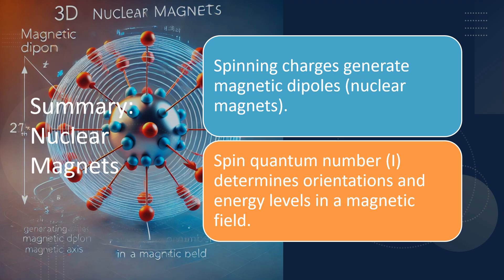To summarize, nuclear magnets arise from the spin of protons and neutrons. They interact with magnetic and electric fields, creating unique behaviors based on their spin quantum numbers. These properties are the foundation for techniques like NMR and MRI, which have transformed science and medicine.